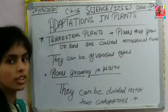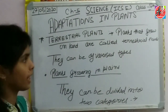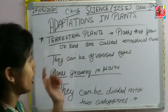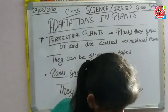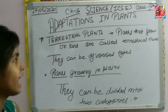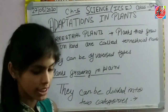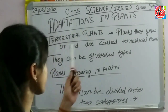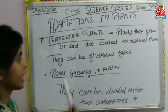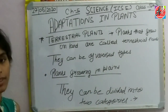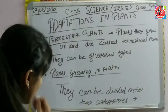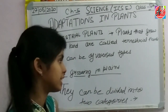Terrestrial plants are called terrestrial plants. Plants that grow on land are called terrestrial plants. They can be of various types and varieties.